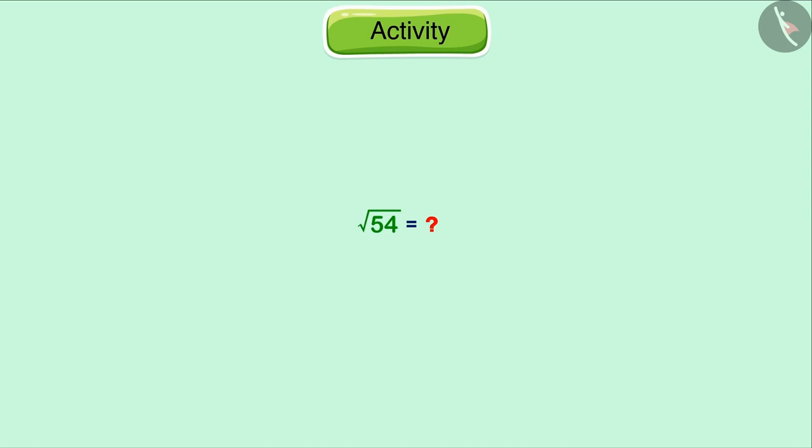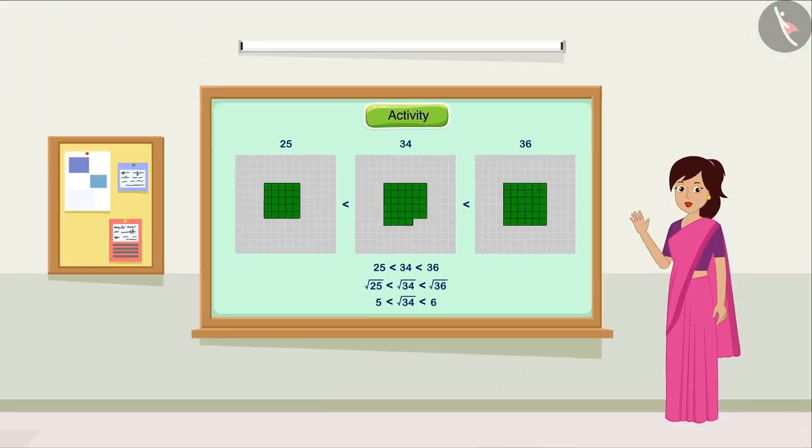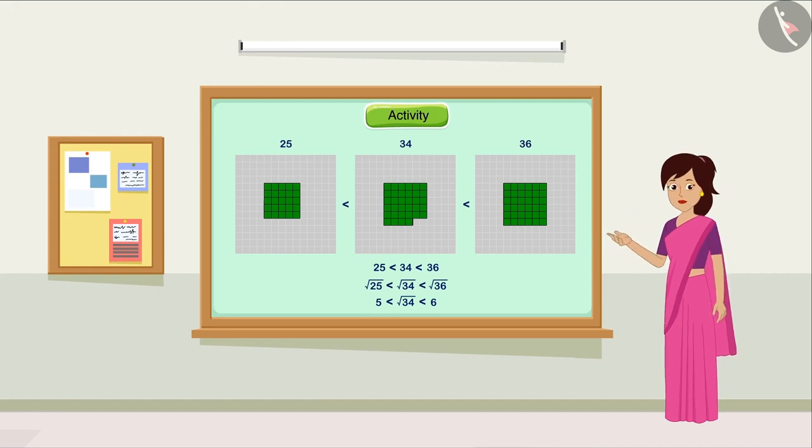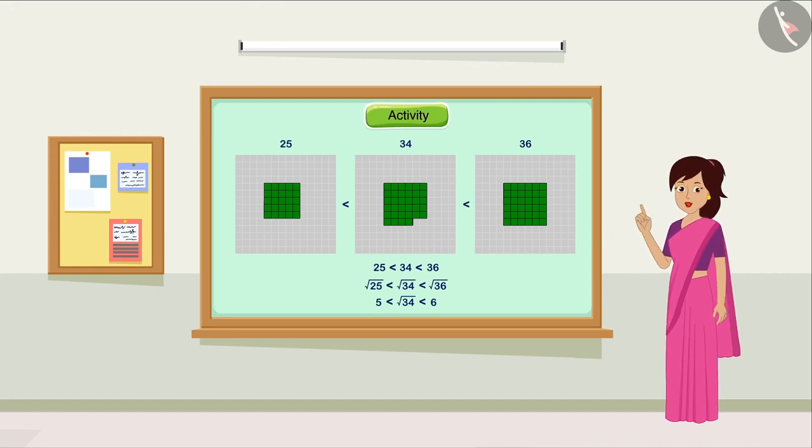Similarly, find the square root of 54. You will find that the square root of 54 lies between 7 and 8. In this video, we learned how to estimate the square root of more such numbers. That's all in this video. Thank you.